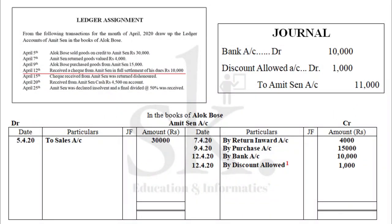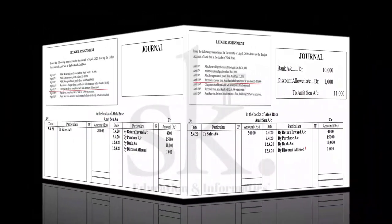The journal entry is: bank account debit Rs 10,000, discount allowed account debit Rs 1,000, to Amit Sen account Rs 11,000. Therefore, on the credit side of Amit Sen's ledger account, both bank and discount allowed are recorded — by bank account Rs 10,000 and by discount allowed account Rs 1,000. Discount allowed is marked as working number 1, because Rs 1,000 is an alien figure not directly given in the problem, so we must show the calculation.